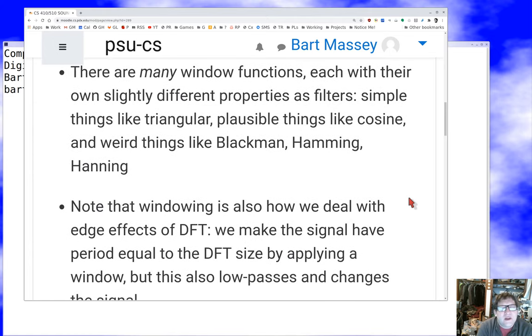There are many window functions out there. It seems like the whole field of digital signal processing was obsessed with finding a better window. There are simple things like triangular windows, plausible things like cosine edge functions like Blackman, Hamming, Hanning, and other more DSP motivated windows. Basically, we're going to convolve some symmetric function that goes near zero at the edges with the signal, and that's going to give us the output of our filter.